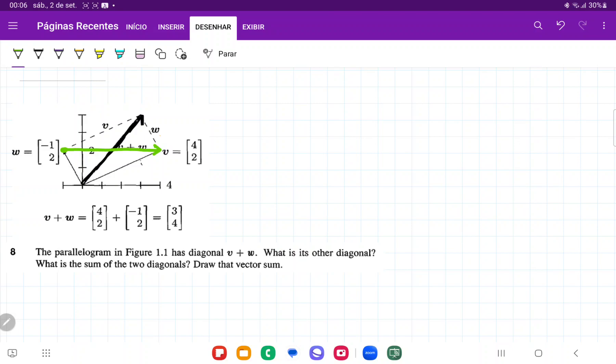So how can we think about this diagonal here? Well, we can think of it as being the tip-to-tail addition of V and W. So if we think of W going from the origin to here, and then doing tip-to-tail addition going W plus this green one, we're going to end up with this yellow vector as a resultant, which is vector V.